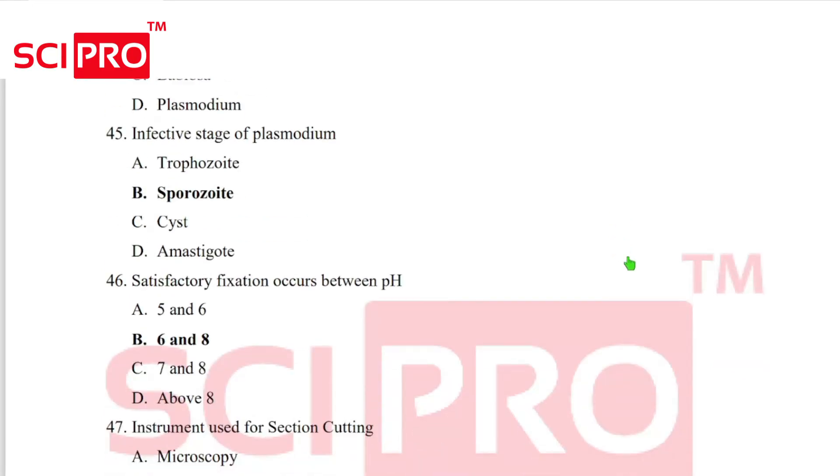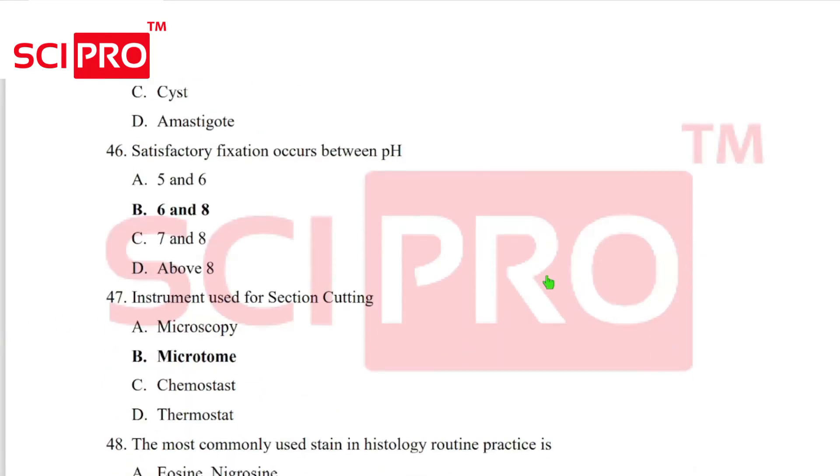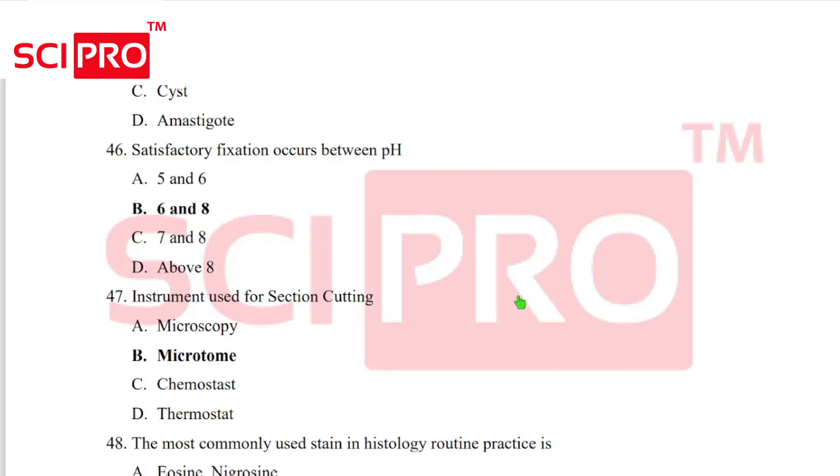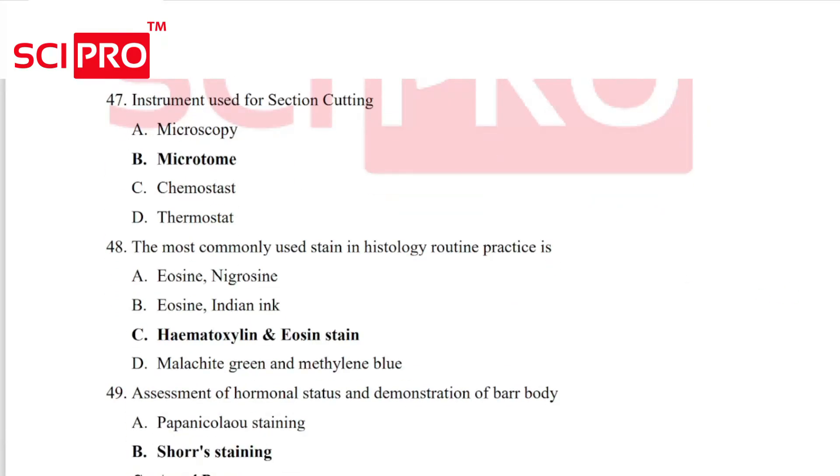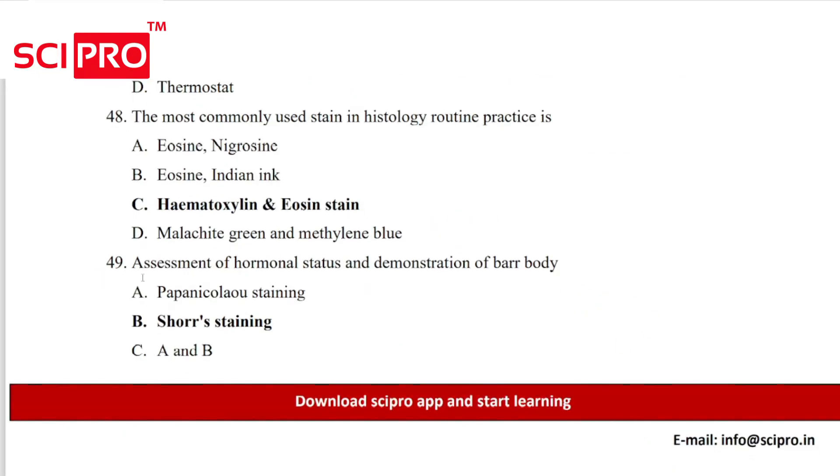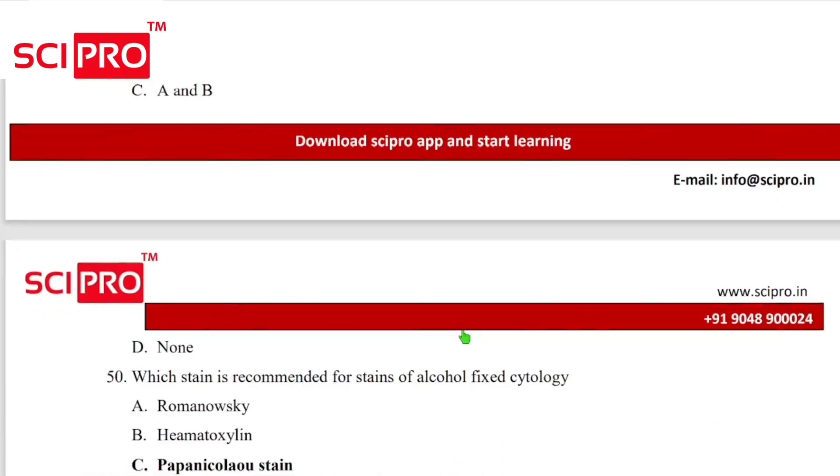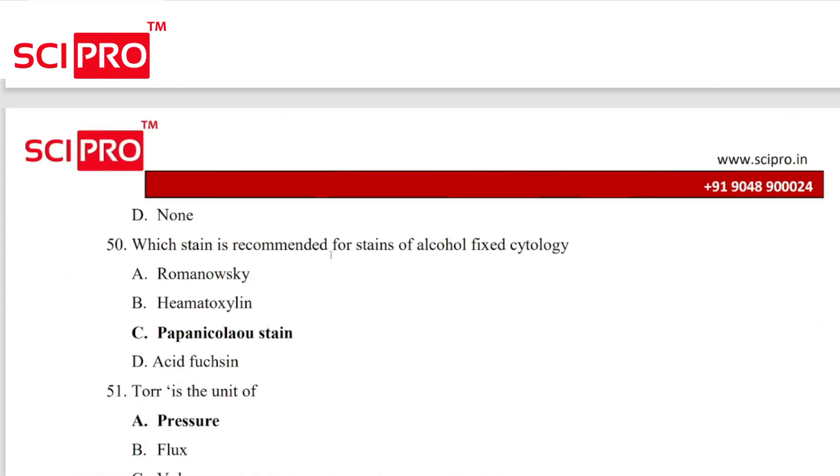Question number 46, satisfactory fixation occurs between pH 6 and 8. Question number 47, instrument used for section cutting, microtome. Question number 48, the most commonly used stain in histology routine practice is hematoxylin and eosin. Question number 49, assessment of hormonal status and demonstration of Barr body. Answer, Shorr staining. Question number 50, which stain is recommended for stains of alcohol-fixed cytology? Papanicolaou stain.